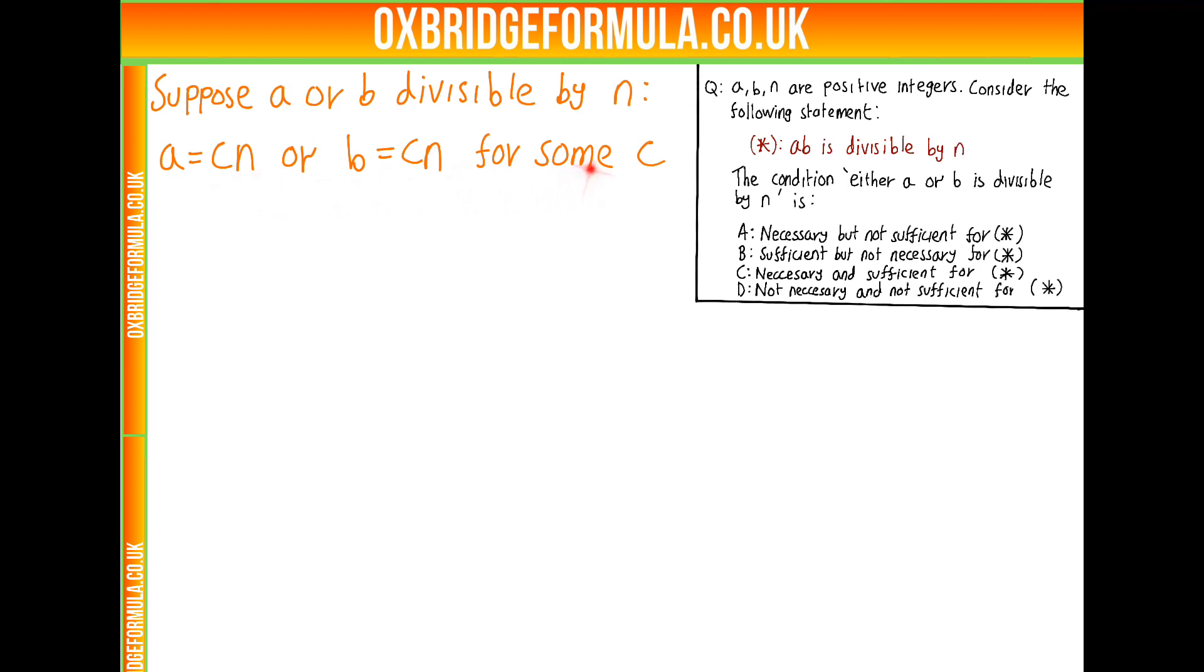So if this is true, this means AB is BCN or AB is ACN. Simply times in both sides by B here and times in both sides by A. So it doesn't really matter which case we're in. Because in either case, we've got AB is equal to BC, which is some positive integer, lots of N.